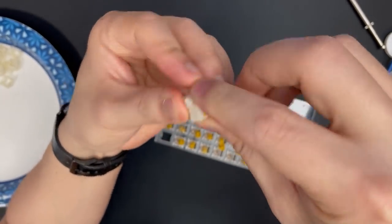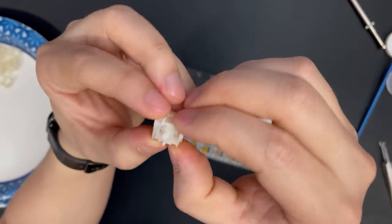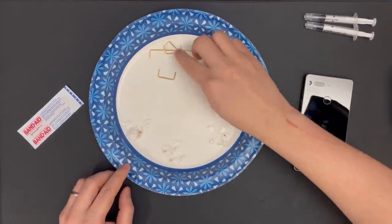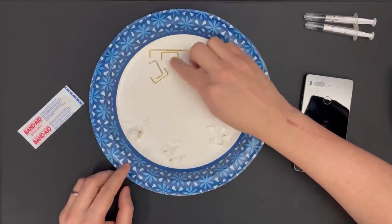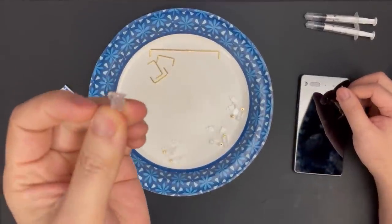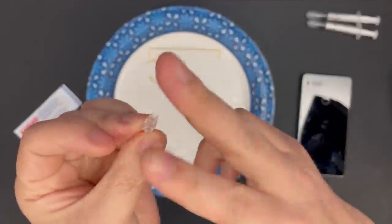Once all 82 switches are done, my next step is preparing the stabilizers. You'll need a 6.25U spacebar wire and three 2U wires for the GMMK Pro. With the Duroc V2 stabs, the stabilizer stems are already flat at the bottom, so there's no need to clip anything.